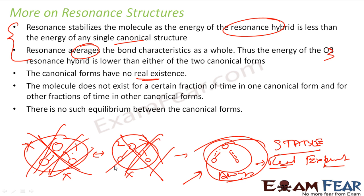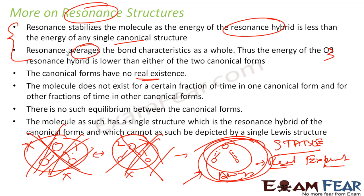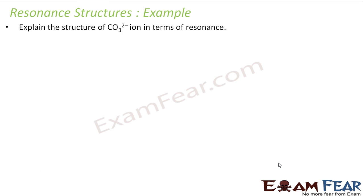The only shape that exists is the resonance structure, and it is pretty stable. Its energy is even lower than the average energy calculated from the canonical forms. That's why we say resonance makes the structure stable. For these kinds of structures, the resonance hybrid cannot be depicted by a single Lewis structure — all single Lewis structures are wrong. The moment you encounter resonance, you should only talk about the resonance structure.